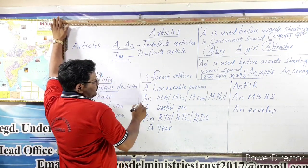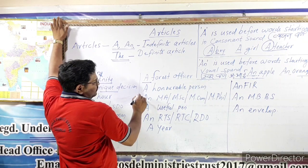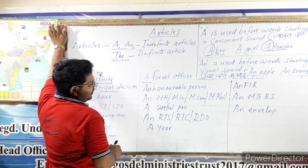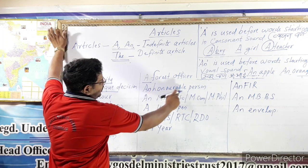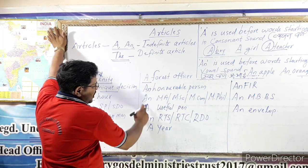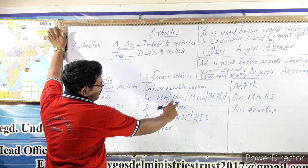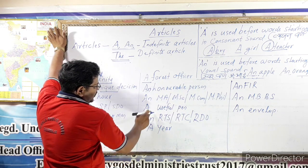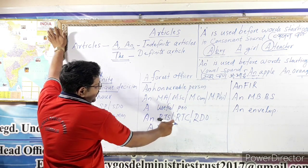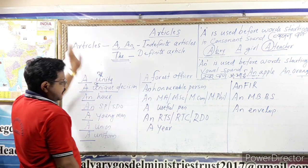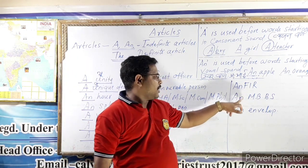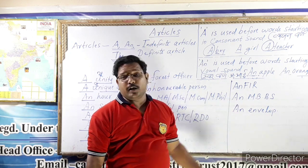More examples: a unity, a unique decision, a young man, a union, a uniform, a forest officer. An honorable man, an honorable person. An MBBS, a useful pen, an RTC, an RDO, an ear, an FIR, an MBBS, an envelope.